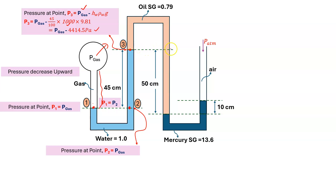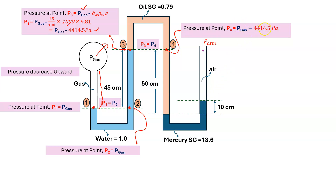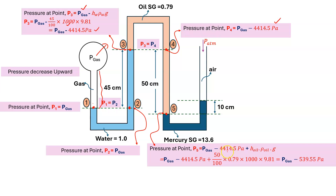From the next two-liquid interface, drawing a horizontal line, the pressure is the same on both sides, so P4 = P3 = P_gas minus 4414.5 Pa. Going downward from point 4, pressure increases due to the oil column. Height is 50 centimeters, specific gravity of oil is 0.79, so density is 790 kg/m³. P5 = P_gas minus 4414.5 plus (0.50 × 790 × 9.8) = P_gas minus 539.55 Pa.